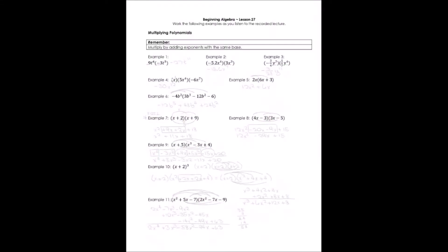Let's look at multiplying polynomials together. We have to remember when we multiply polynomials, the rules for multiplying the same base with exponents. When we multiply numbers that have the same base but an exponent, we add the exponents.